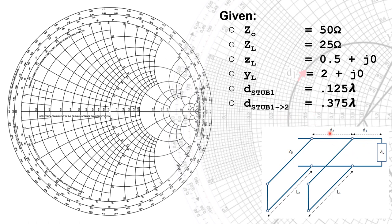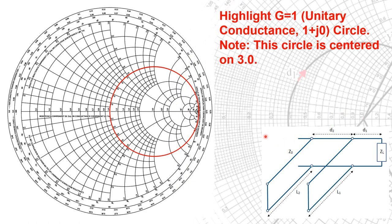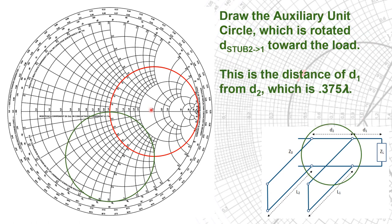Our distance d1 to the first stub is 0.125 lambda, and our distance between stubs is 0.375 lambda. Let's start by highlighting the unitary conductance circle at 1 plus J0. Remember that the center is here on 3 J0. Then draw the auxiliary unit circle, which is rotated the distance from stub 2 to stub 1 toward the load — in this case 0.375. So we've taken our arc, drawn it around to here, and moved that circle to the next position.